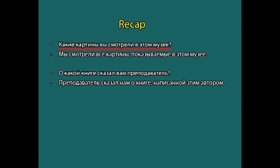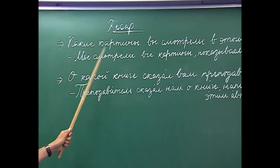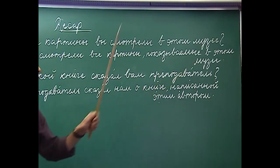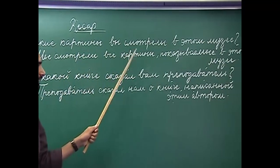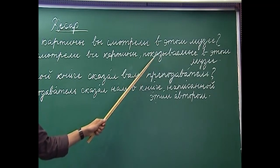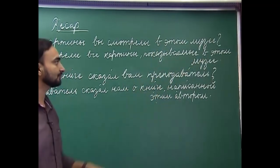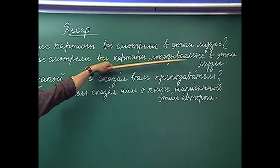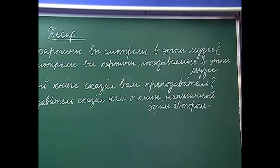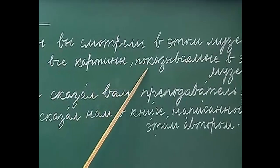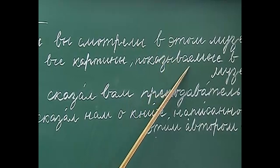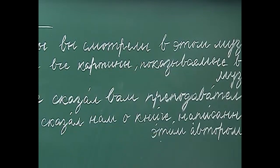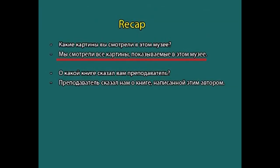Which paintings did you look at in this museum? We saw all the paintings which are being shown in this museum. Here, as you can see, this passive participle denotes the present tense. That is why we are using present participle passive. If you change the sentence into a complex sentence with the word 'katori', how will you do that?